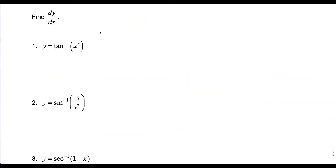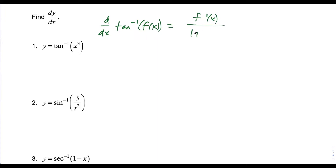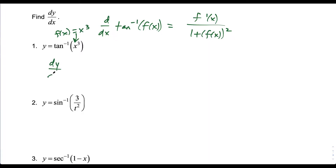For this first question, we'll use the chain rule variant for the derivative of tangent inverse — not at x, but at f of x. The formula gives us f prime over 1 plus f of x squared. Notice I'm not just taking the derivative of tangent inverse x; the inside function f of x in this case is equal to x to the third, so I have to use the chain rule here.